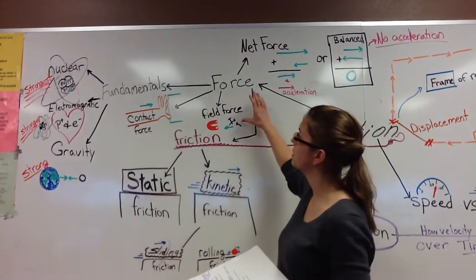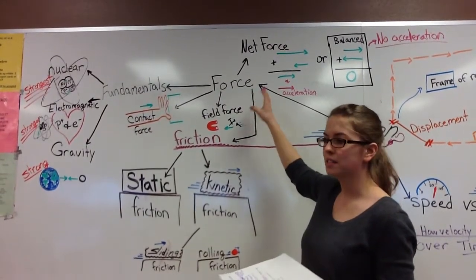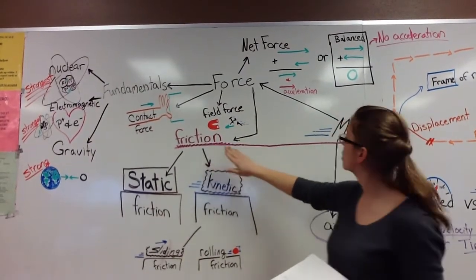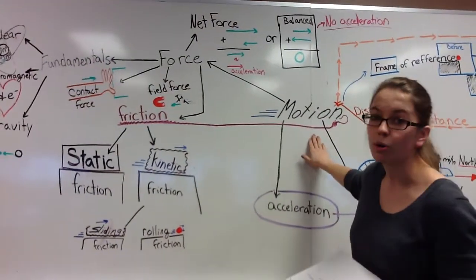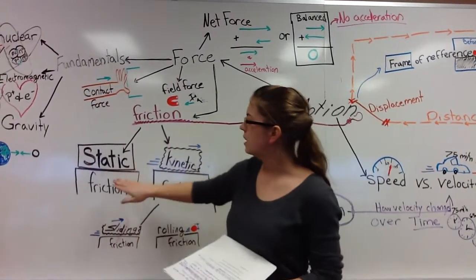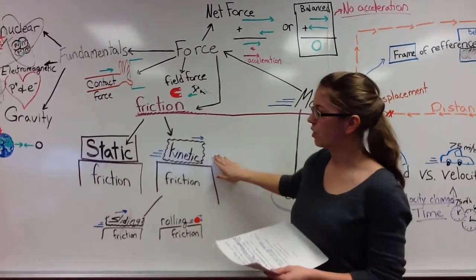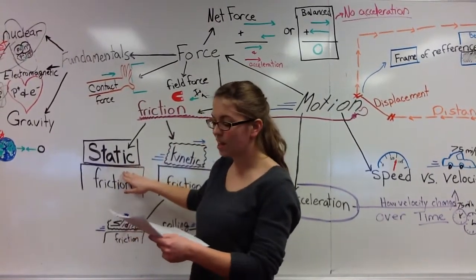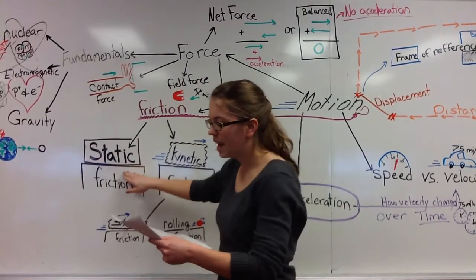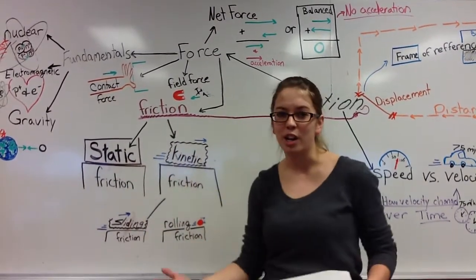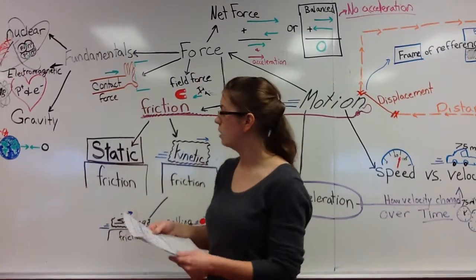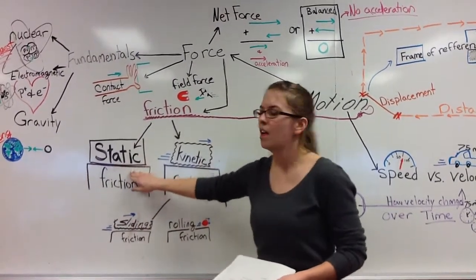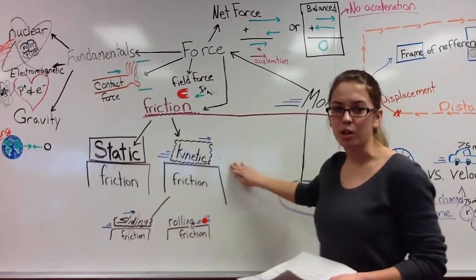Another force that people don't think about as often, unless you're in physics class, is friction. Friction is a force that is constantly opposing motion. It can be either static friction or kinetic friction. Static friction is a force on objects that are not moving. It's always harder to get something started than it is to keep something going once it's already in motion. And as would be expected, it's harder to overcome static force than it is to keep kinetic force going.